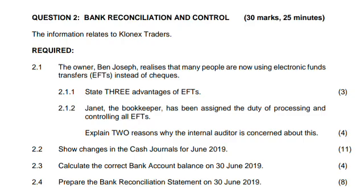If you are a first-time matriculant in 2025, your scope for the June common exam ends with Topic 3 — fixed assets — as you likely have not yet covered reconciliation and budgeting. However, if you are rewriting or upgrading, expect a reconciliation question, because your scope is based on what the final examination at the end of 2024 looked like. For practice, use the 2024 November question papers rather than the June papers, as those reflect what you are upgrading or rewriting from.